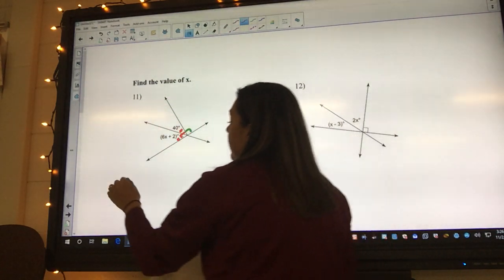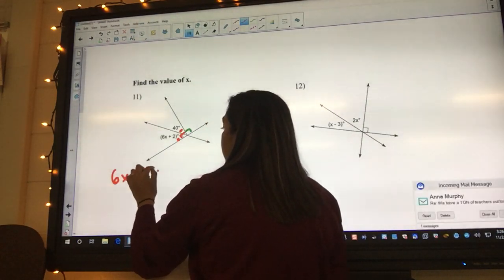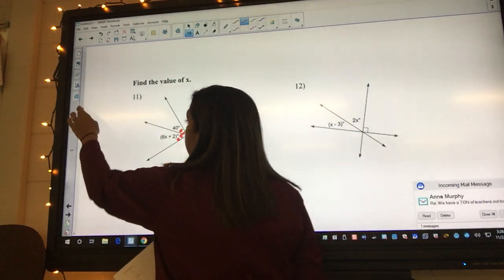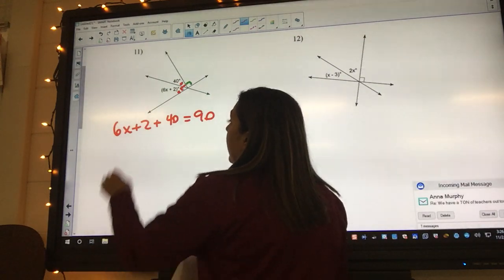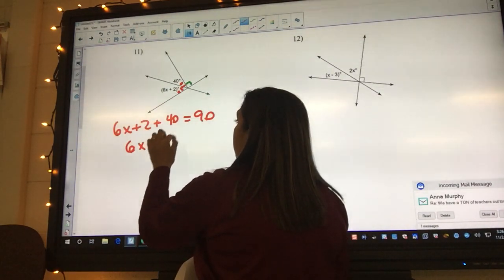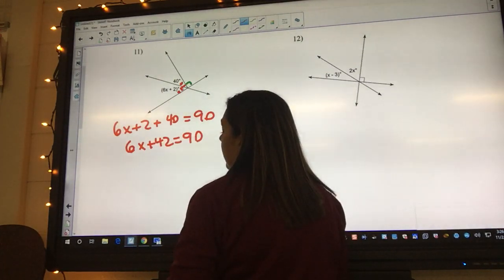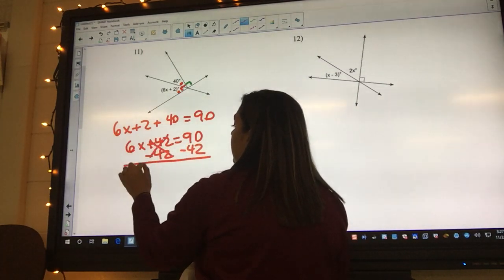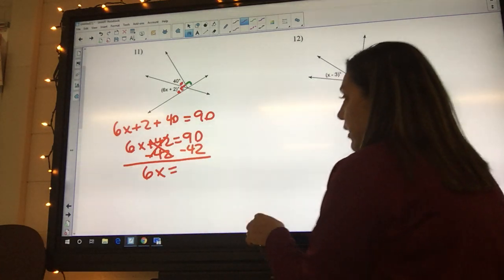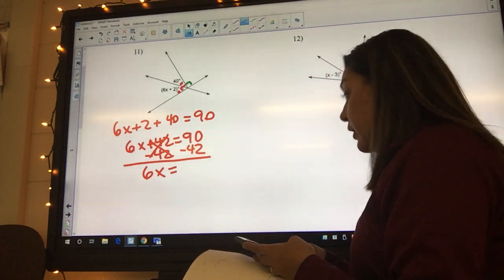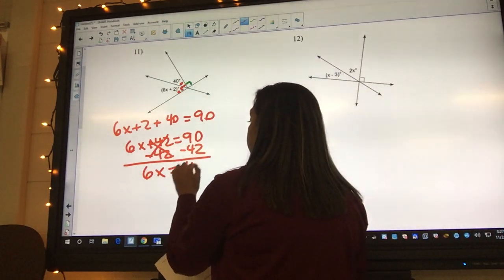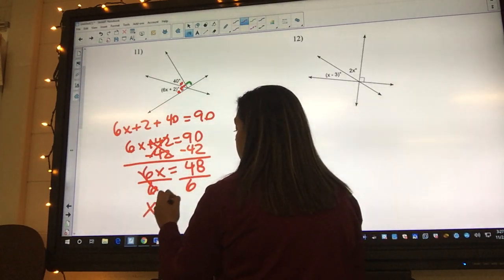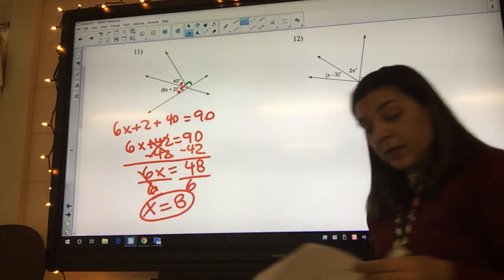So I can say 6x plus 2 plus 40 equals 90. Well, I can combine my like terms, so 6x plus 42 equals 90. Then I need to subtract, so I got 6x equals 90 minus 42 equals 48. And then my very last step is going to be to divide by 6, so x equals 8.